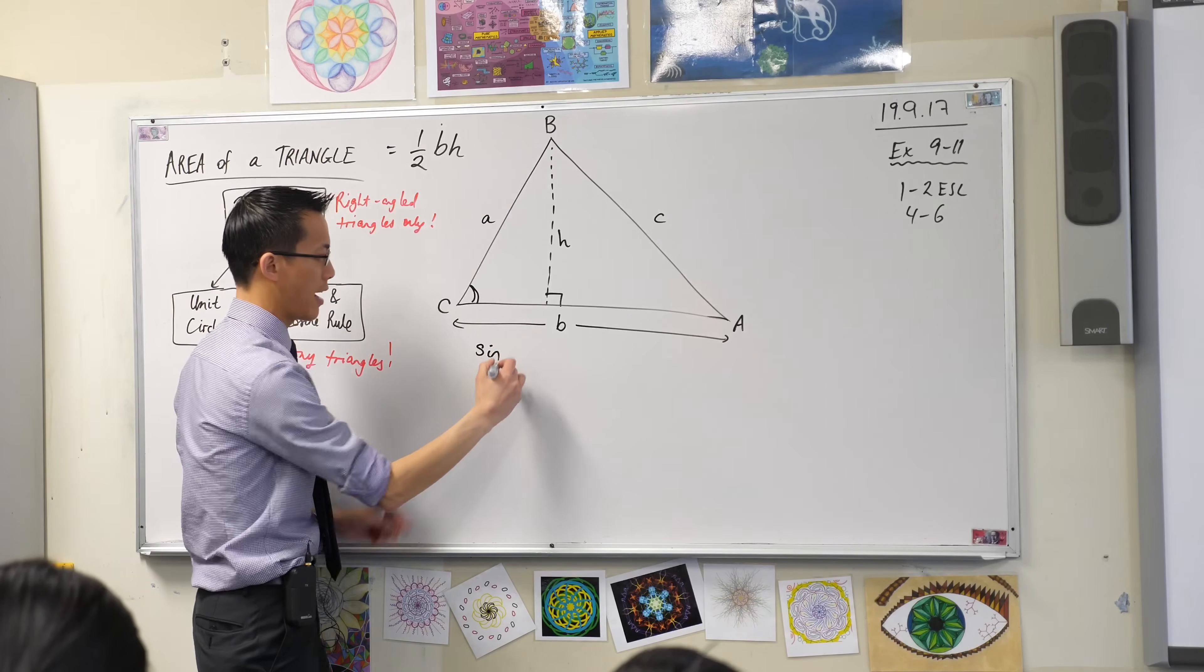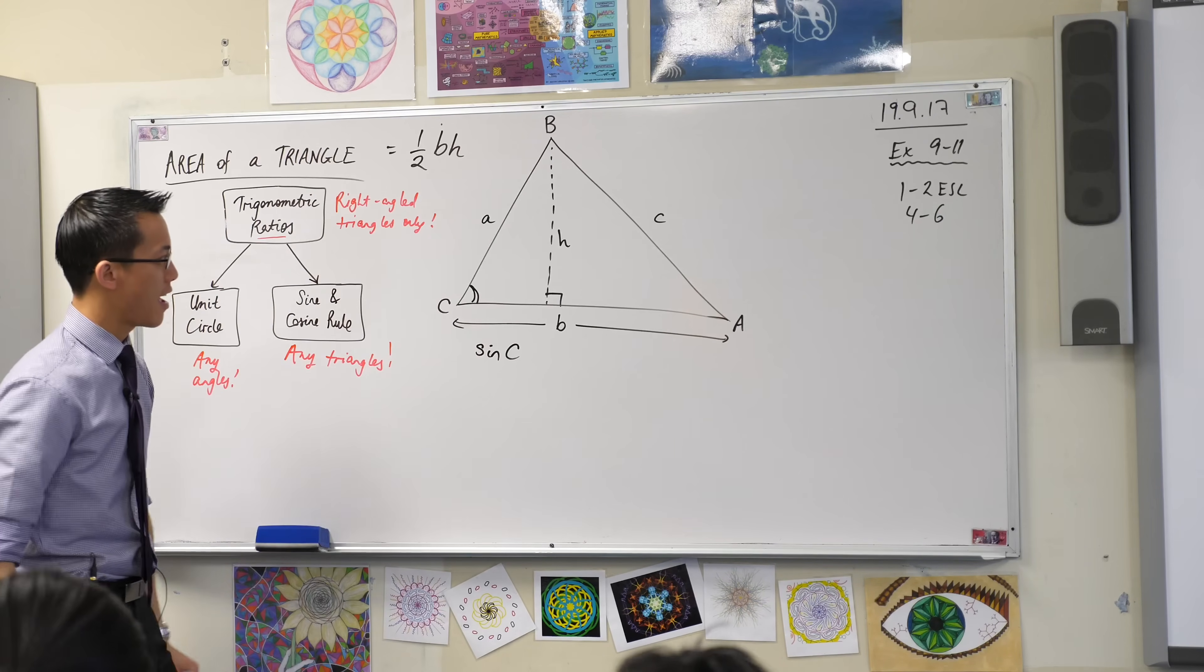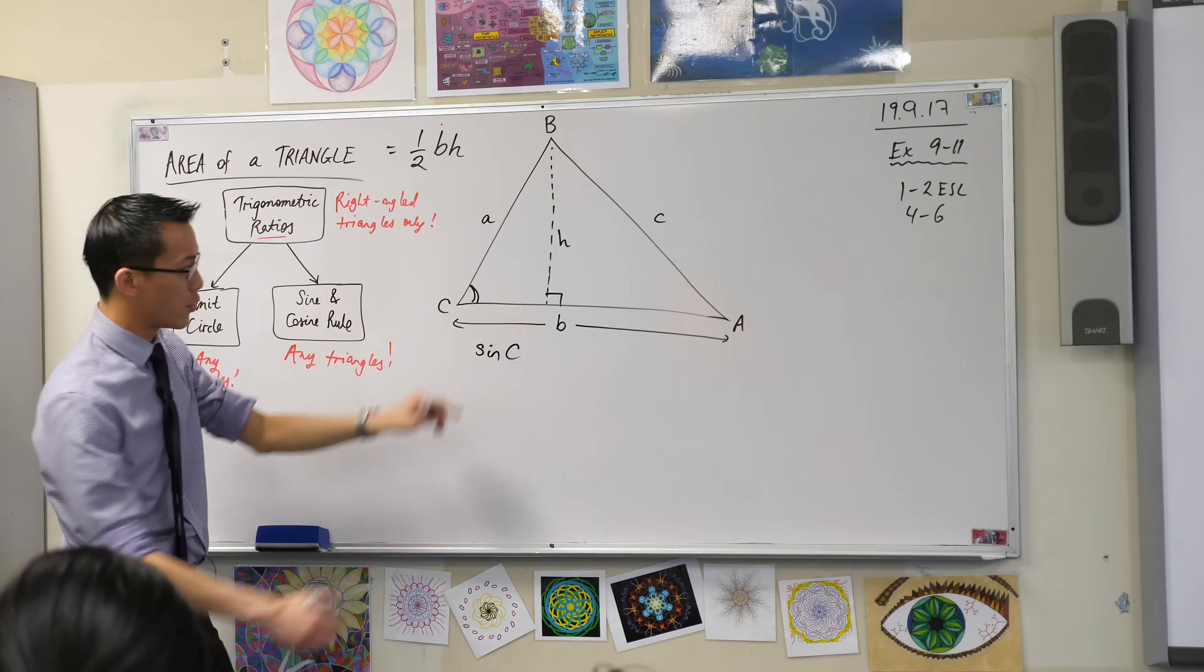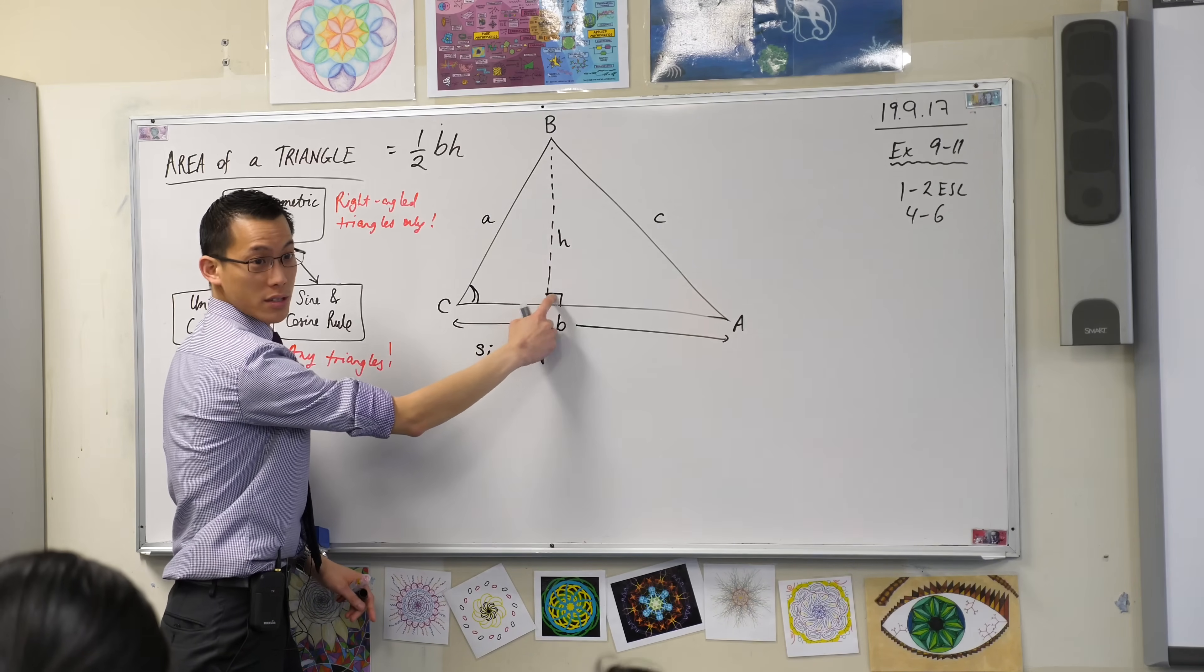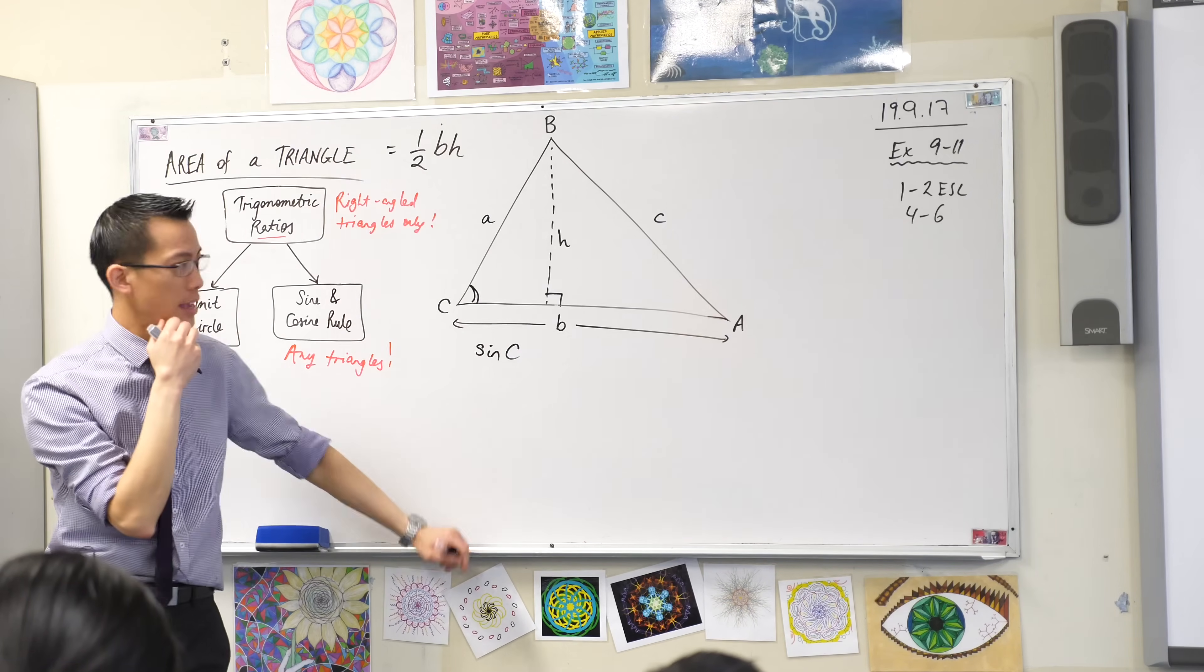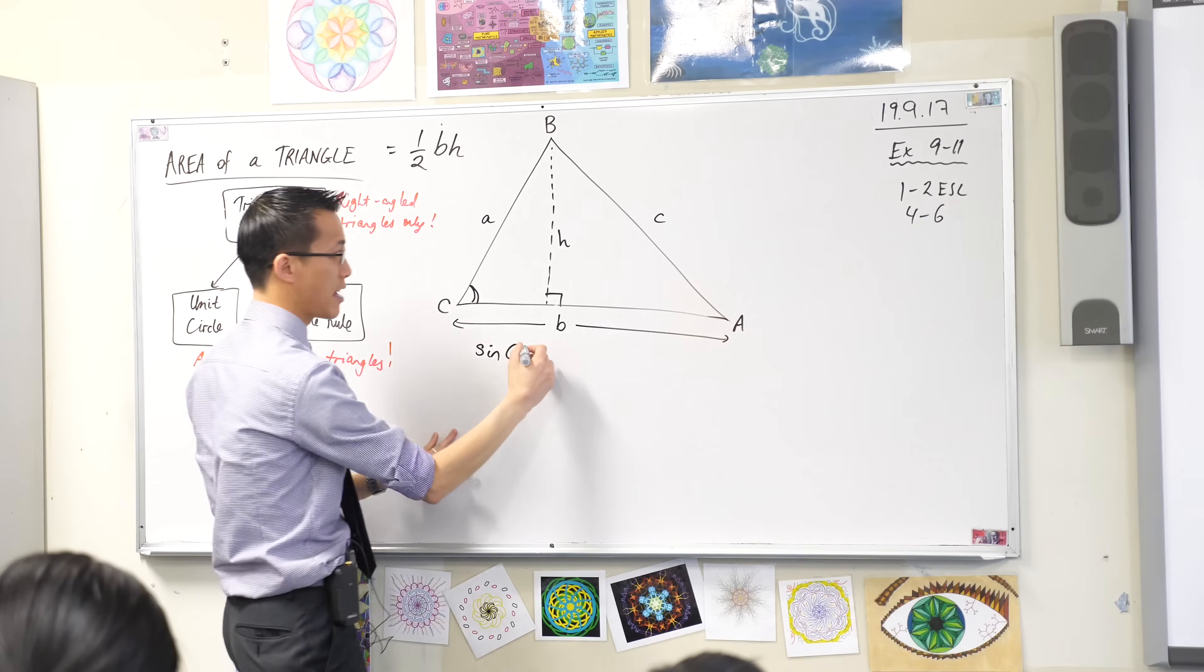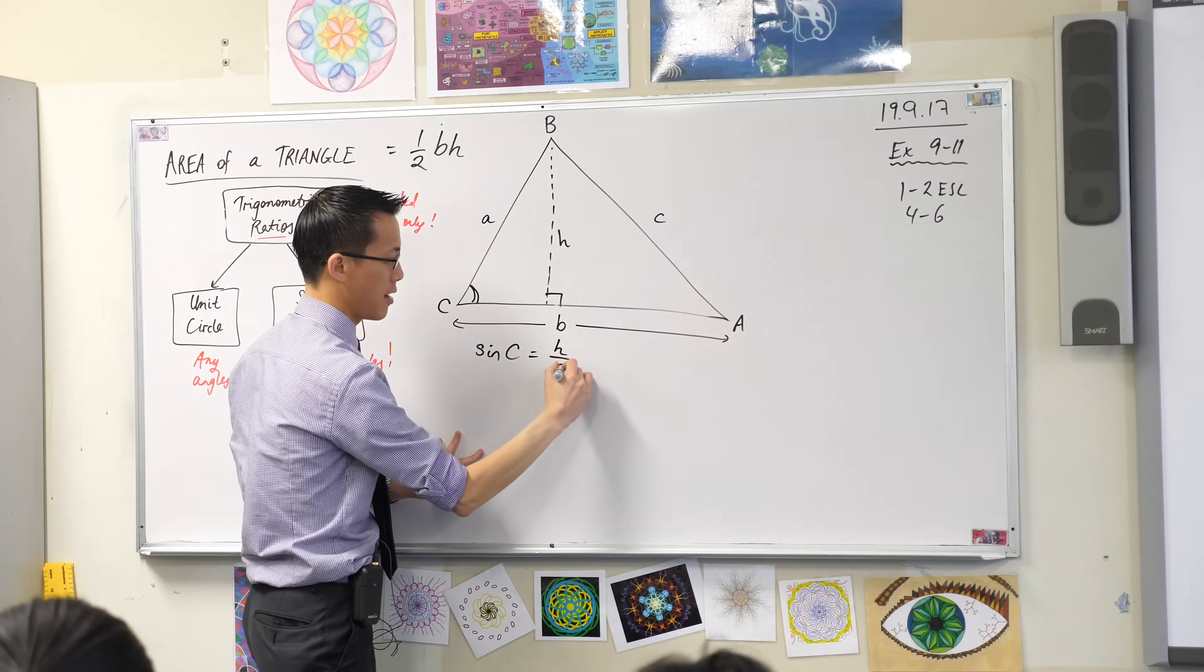if I said sine of this angle, sine of angle C, in this triangle over here, which is right angled. There's right angles on both sides here. Which pair of sides have I got, and what ratio is it? It's opposite, which is H, over A, which is the hypotenuse. Can you write that for me? H over A.